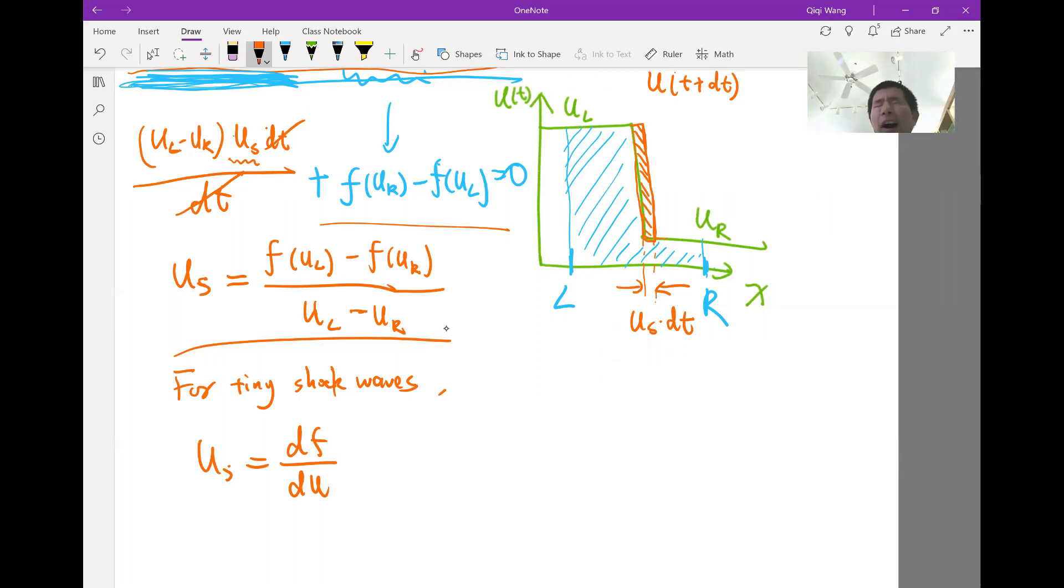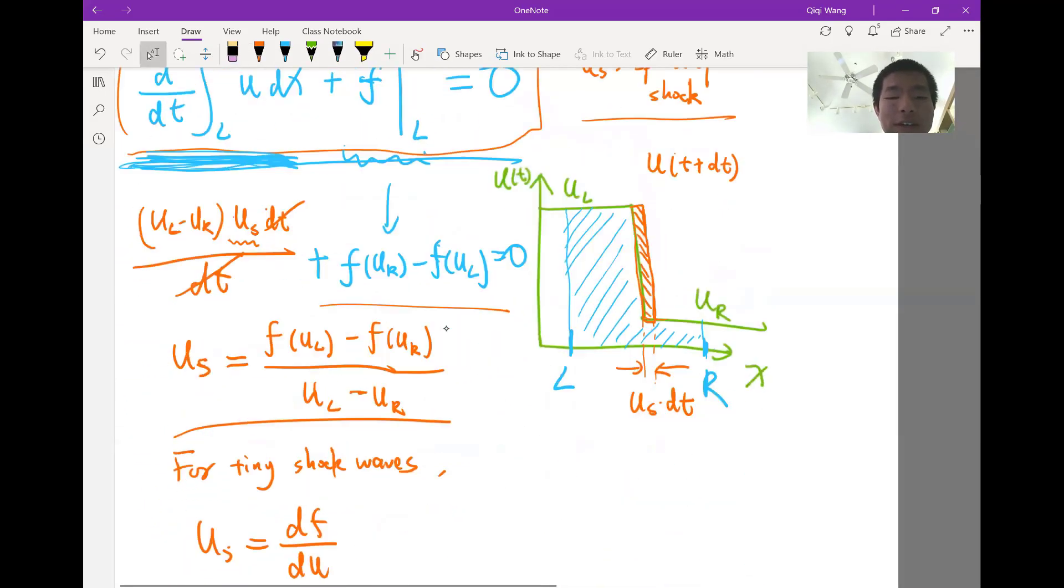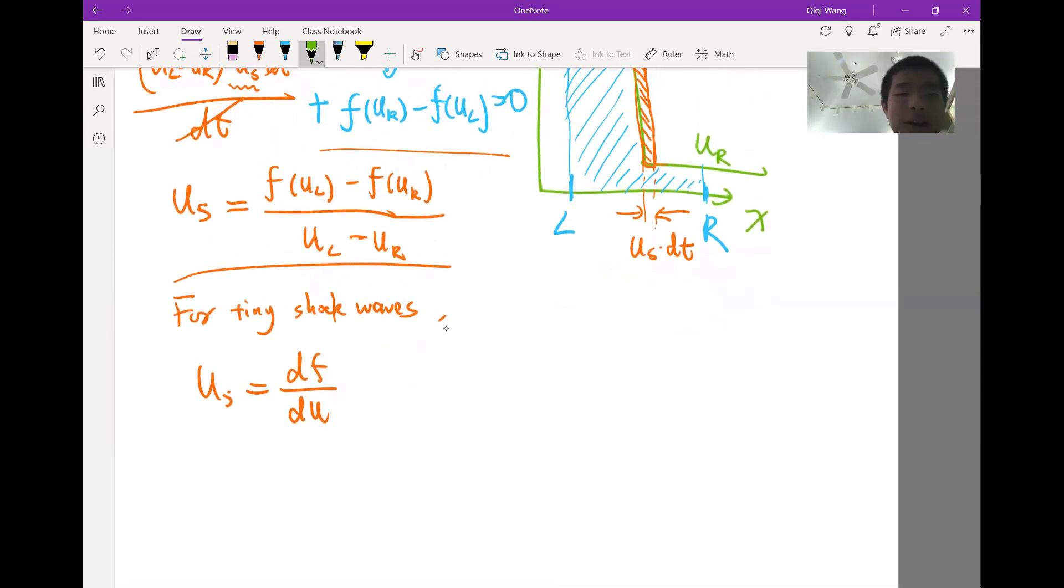So when ul and ur are almost the same, then f(ul) and f(ur) are also almost the same. Then us is df/du. And remember, if I have this differential equation, if the differential equation is du/dt plus df/dx equal to 0, that can be written as du/dt plus df/du times du/dx, using chain rule, equal to 0.